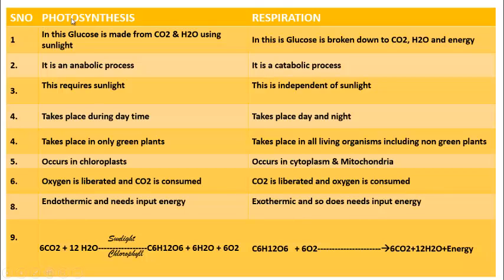In photosynthesis, glucose is made from carbon dioxide and water using sunlight as energy. So plants are making glucose here using carbon dioxide, water and sunlight. In respiration, glucose is broken down to carbon dioxide and water. So here it is made, here it is broken down. That is the difference.